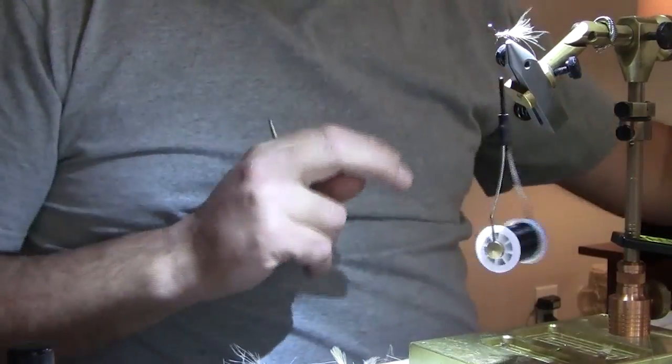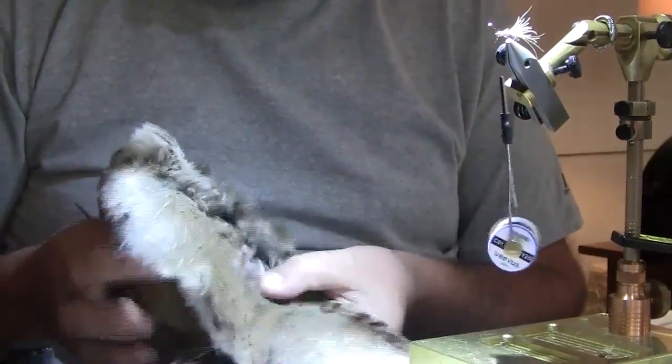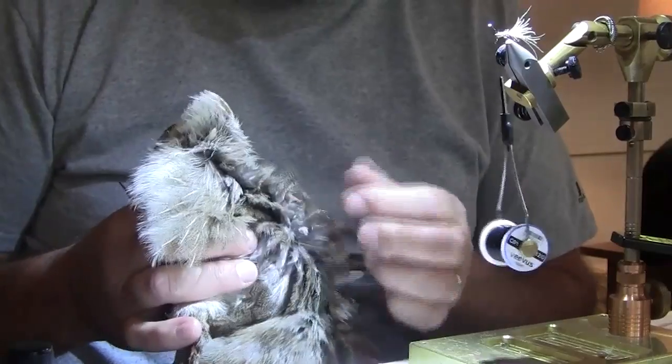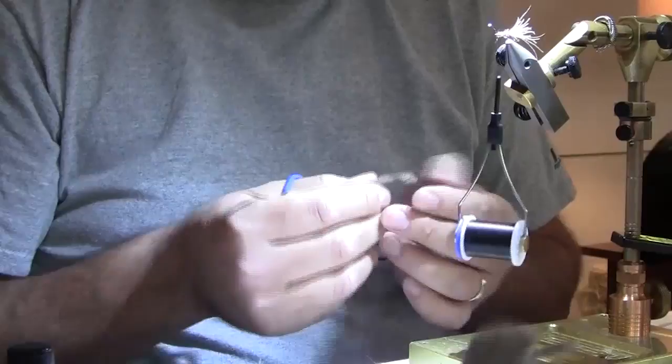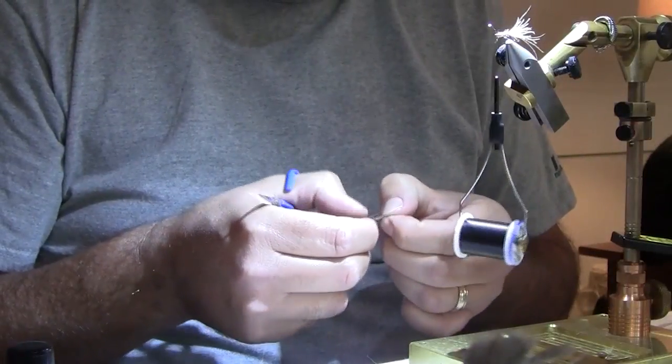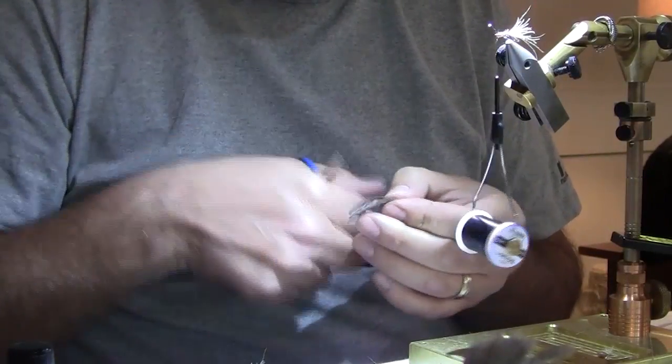Two ways to do this hackle. You can use a partridge and just wrap it around or you can tie it in a throat style. I am going to do a throat style just because it's easier for me to get the hackle underneath where it should be instead of having it on top of the fly.